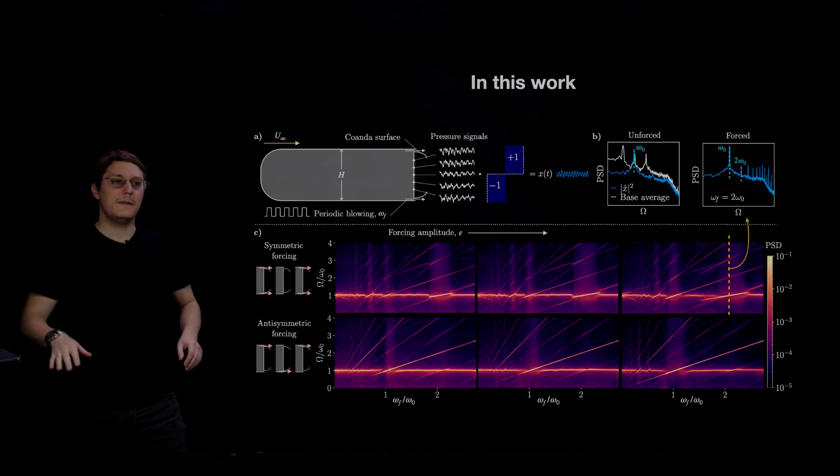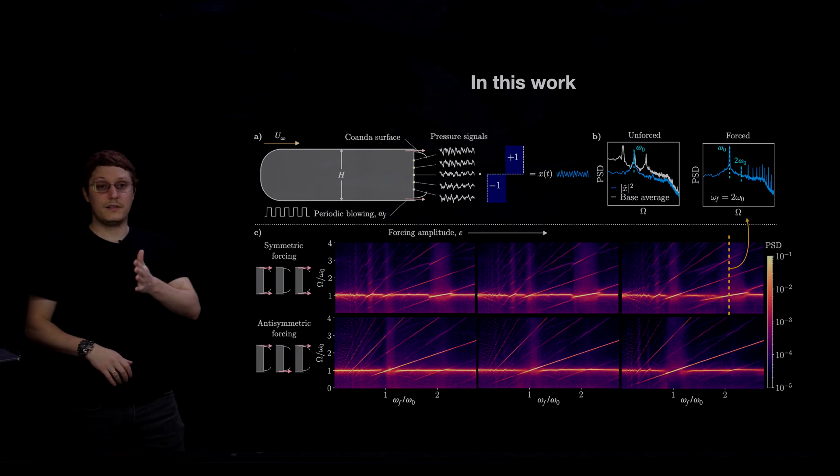So if we take these 200 power spectra, and we vertically stack them one next to the other, we get one of these heat maps. And we have six of them, because we consider three forcing amplitudes, denoted by epsilon, and two forcing configurations.